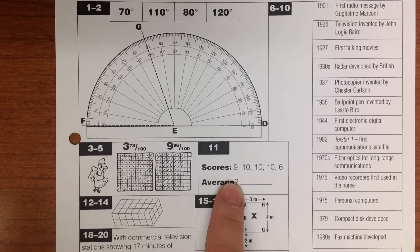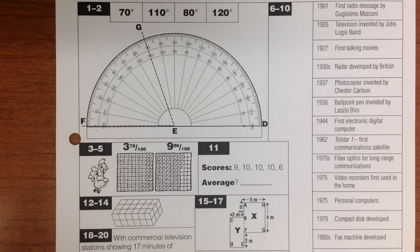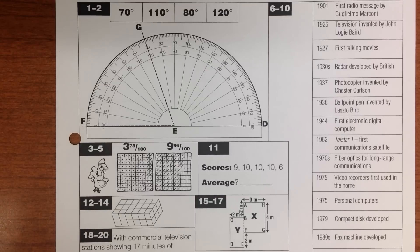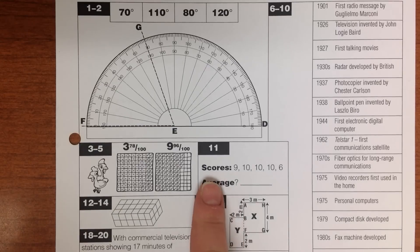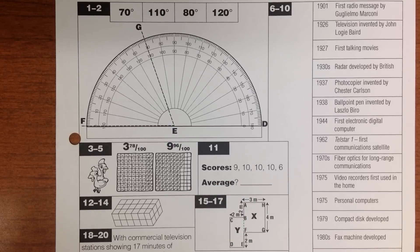Number 11. To find the average, you must add the scores and then divide by the number of scores. On your sheet are Lily's scores out of 10 on 5 different math tests. What was her average? What is Lily's average on her test scores?